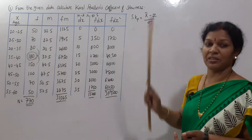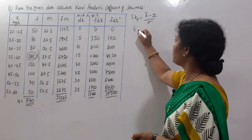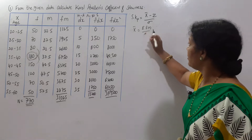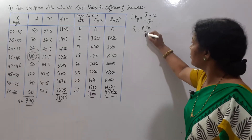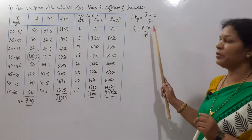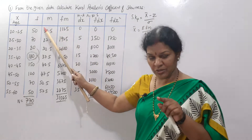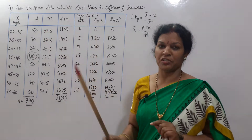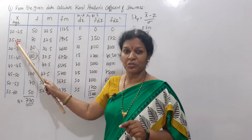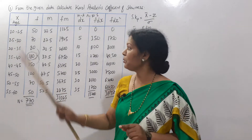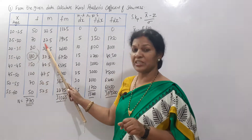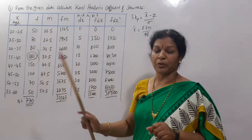First, we calculate x̄. The formula is x̄ = σfm / n. Here fm means frequency multiplied by mid value. The mid value for the class 20 to 25 is (20 + 25) / 2 = 22.5. For 25 to 30, it is (25 + 30) / 2 = 27.5.